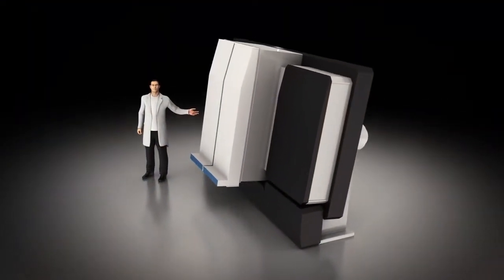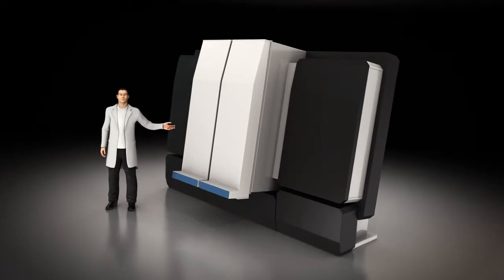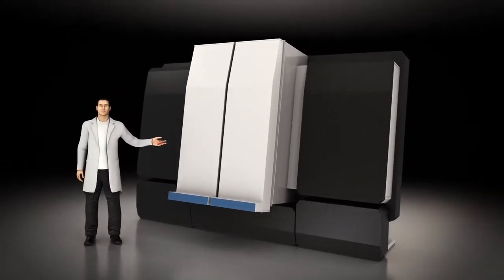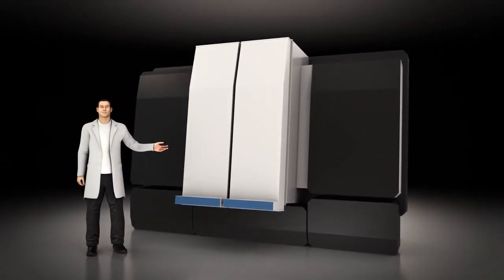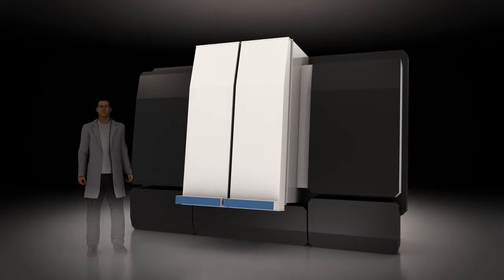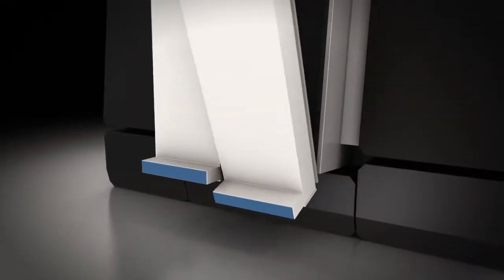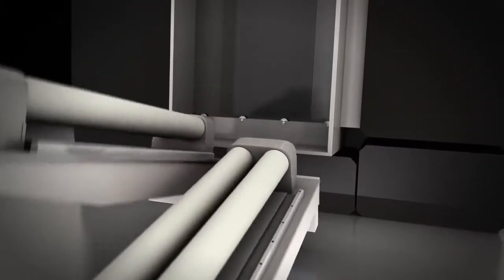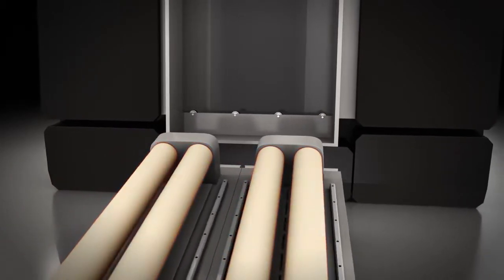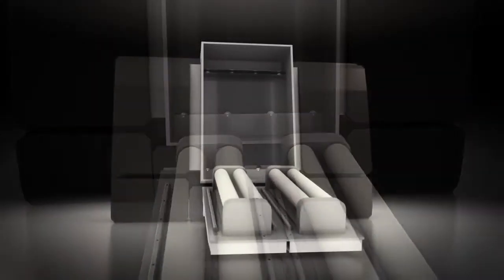Sputtering deposition is done in a vacuum chamber. The most common substrate for the thin layers is glass. The sputter system can have different sizes depending on the application. The source of the thin film material is a planar or rotary sputtering target of metal, ceramic, or even plastic.